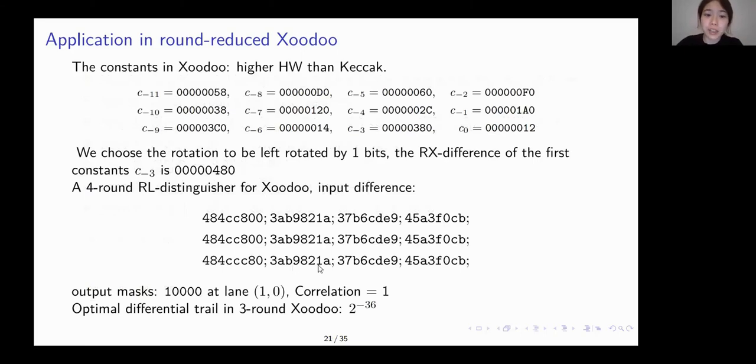So with this input rotational difference, the rotational amount is set to be one bit left. And we get a four round rotational differential linear distinguisher with correlation one. And the output mask is one non-zero bit on the 16th bit of the cell one zero.